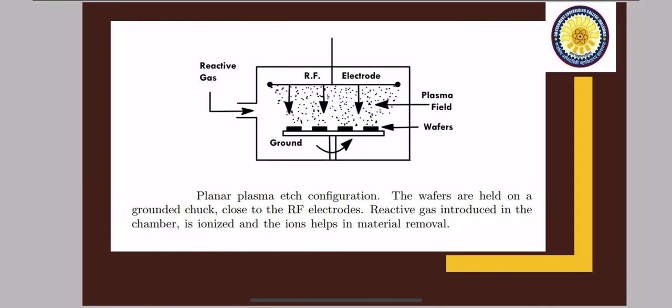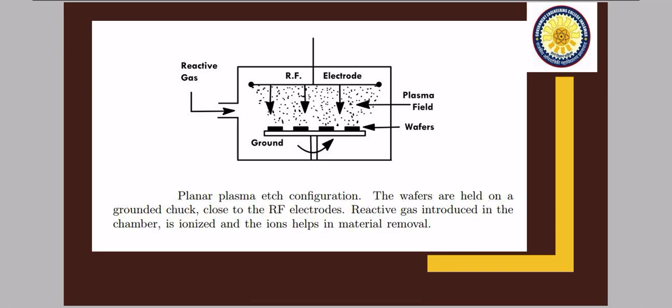Moving on to the next. You can see the plasma chamber here. Here from one end, your reactive gases has been introduced. And you can see the RF electrodes are in parallel. RF on one side, your wafers are placed. After introducing this reactive gas, these RF electrodes basically provide very high potential and convert it into plasma. And then slowly it is coming and reacting with your wafer.